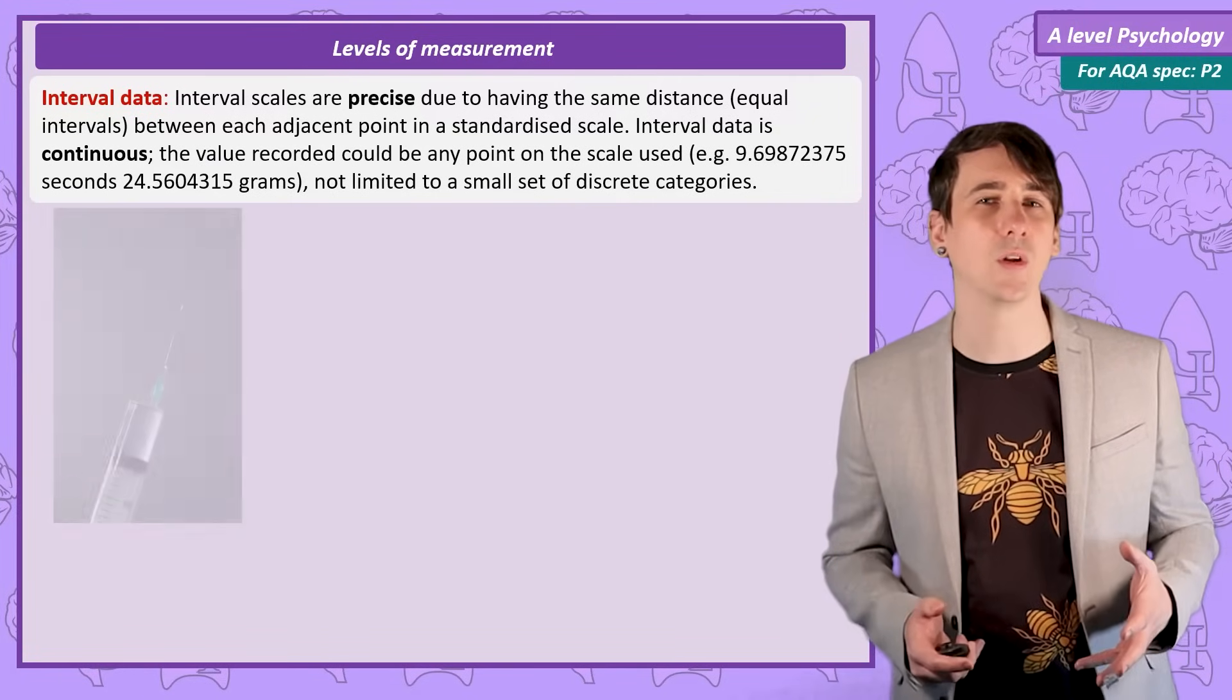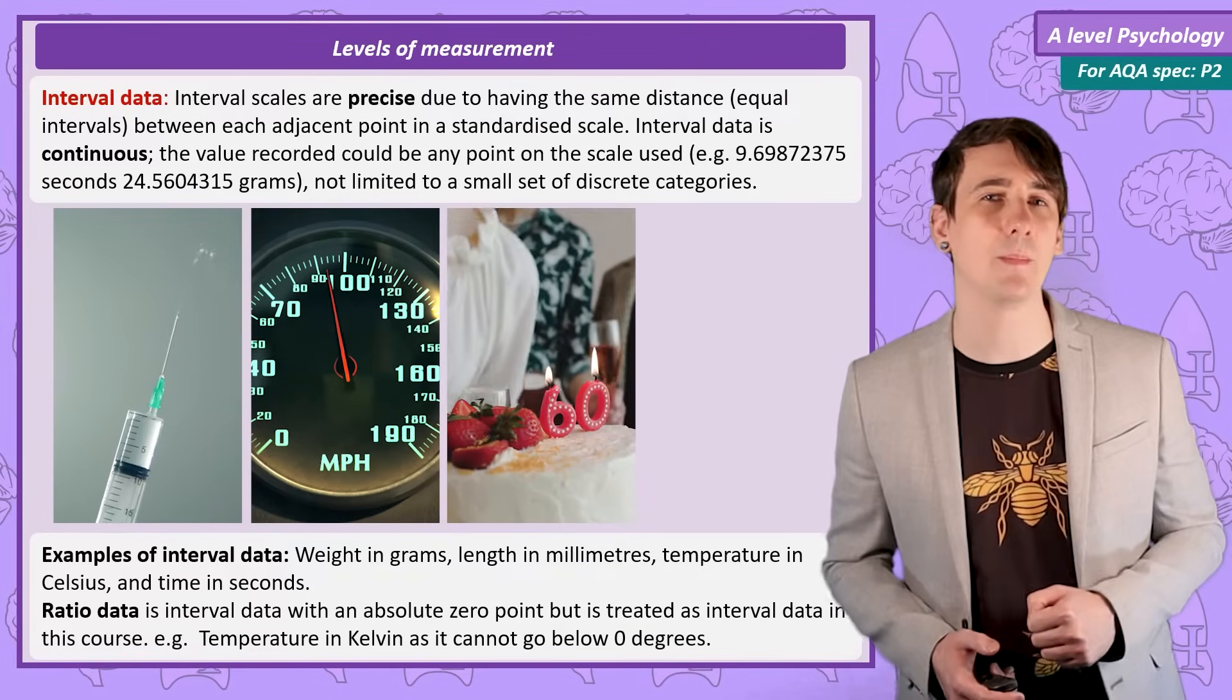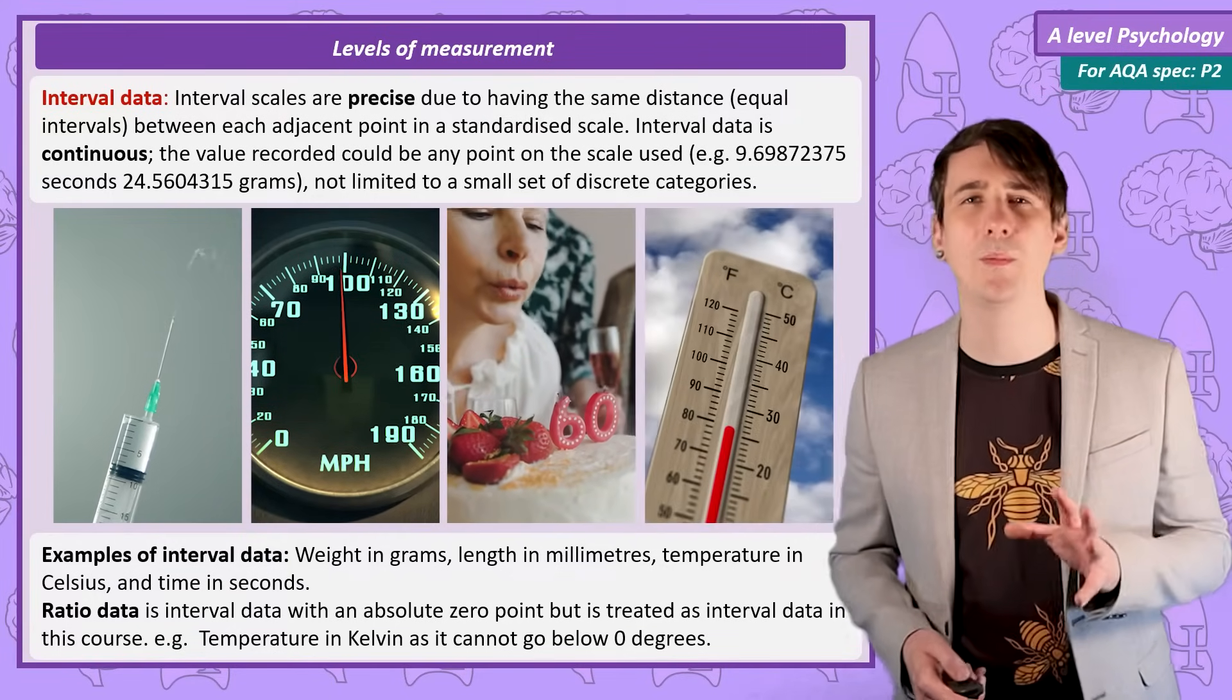Other examples are the quantity of a drug in milligrams, speed in miles per hour, age measured in years, and temperature measured in degrees. An important point, we can also refer to ratio data.